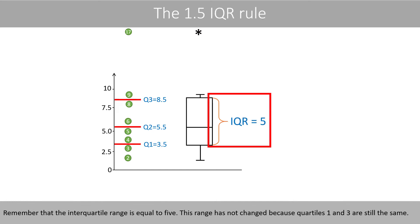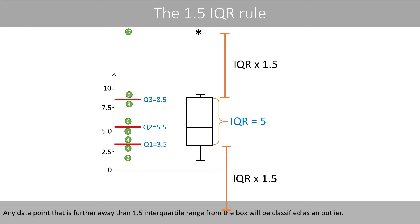Remember that the interquartile range is equal to 5. This range has not changed because quartile 1 and 3 are still the same. Any datapoint that is further away than 1.5 interquartile range from the box will be classified as an outlier.